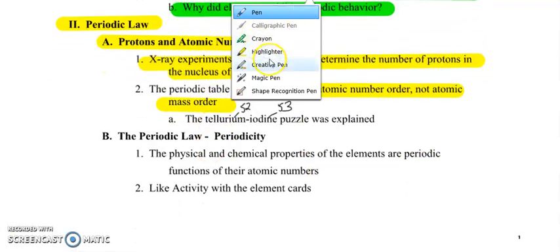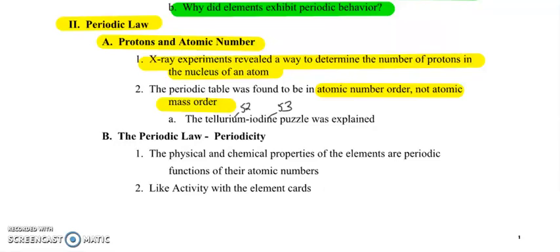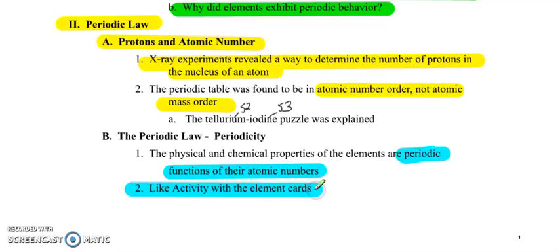So now let's talk about the periodic law. So periodicity. The physical and chemical properties of the elements are periodic functions of their atomic numbers. That means that they repeat. That's what the periodic function means, and it repeats based on their atomic number. Like the activity with the element cards. We may or may not have done that in class yet, but we will soon.